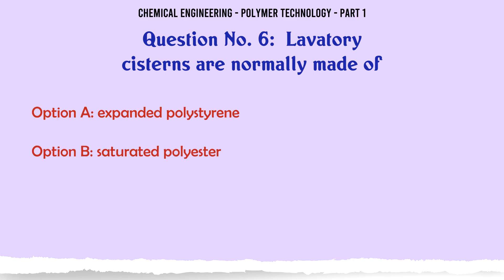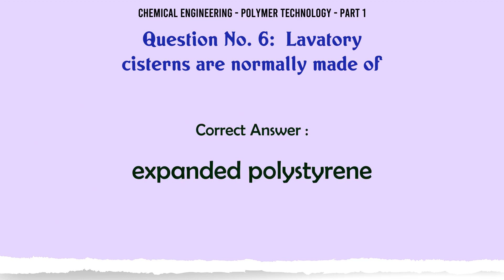Lavatory cisterns are normally made of: A. Expanded polystyrene, B. Saturated polyester, C. Perspex, D. PVC. The correct answer is Expanded polystyrene.